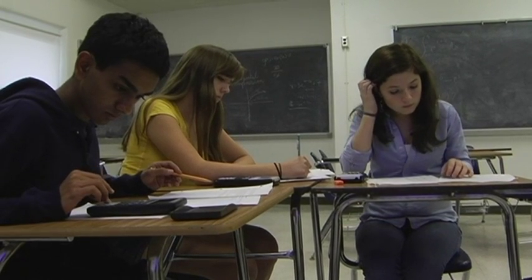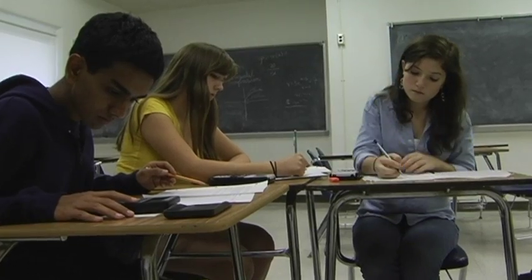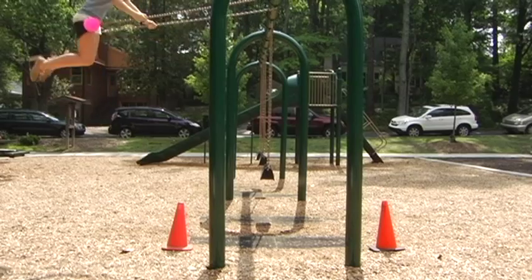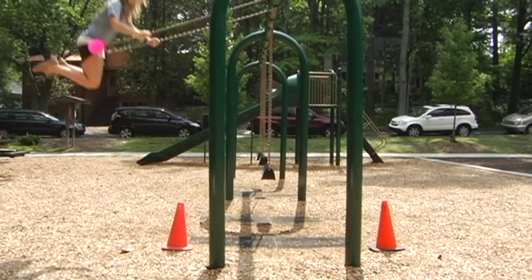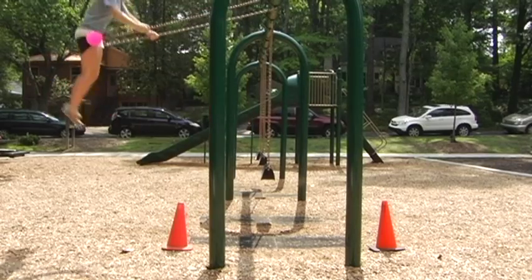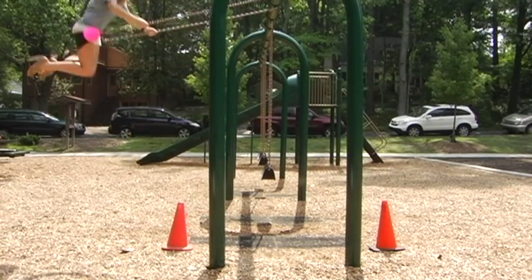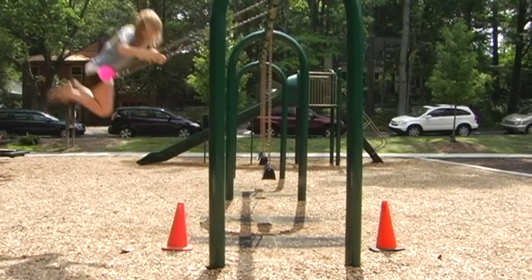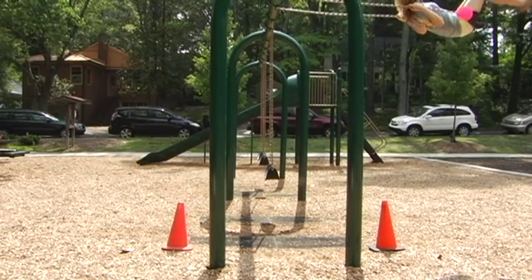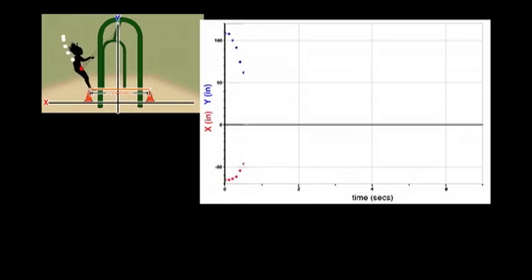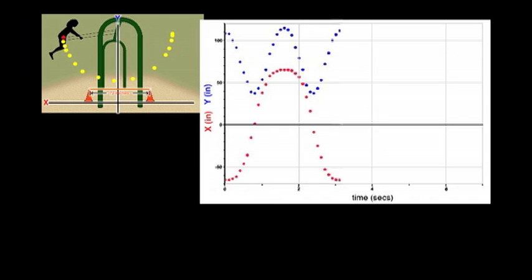After students work on parts one and two of the lab sheet, you should show the video again and have half of the students say up and down when the swinger is at the top and bottom of her swing. Then have the other half of the students say left and right when the swinger is at the left-most and right-most position. We can hear one group of students talking more frequently. This helps to illustrate that the swinger moves up and down twice as often as she does left and right, and should help students understand why the period of the horizontal graph is half of that of the vertical graph. We can also see this important relationship between the periods of the two functions by comparing the graphs on the same set of axes.